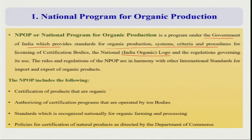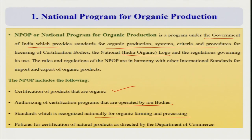NPOP includes certification of products, which is very necessary — unless you make your produce organically certified, you cannot sell it in the international market. It also covers authorization of certification programs and different standards, because unless you maintain good quality standards, you cannot sell your organic produce in the European Union or the USDA. So you have to follow different protocols, and NPOP with its different bodies maintains this quality, along with different policies for certification as directed by the Department of Commerce.